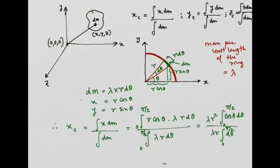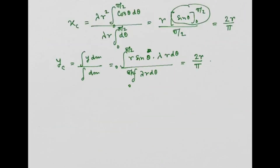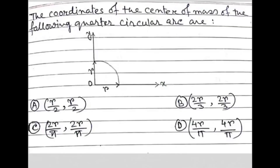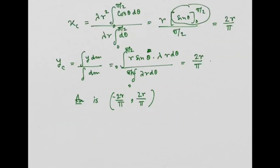Therefore the answer is (2r/π, 2r/π). Looking at the options, option C is correct. Thank you for watching this video, please subscribe to my channel Phi Solver.